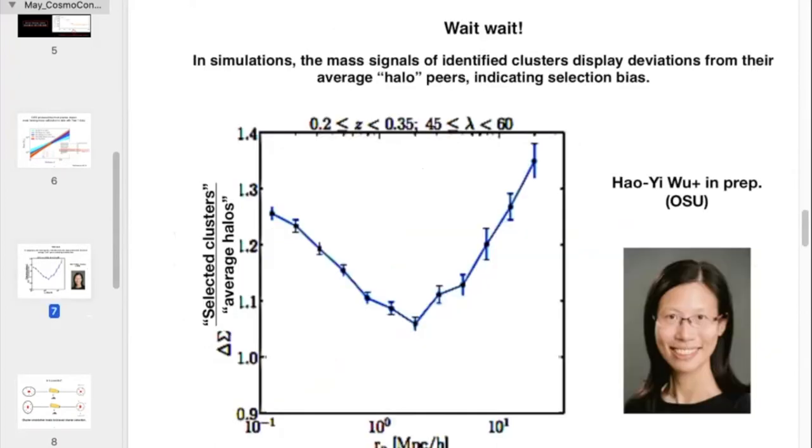So we have the cluster abundance measurements in terms of richnesses and also a weak lensing mass calibration that connects the richnesses to cluster total masses. But before we derive the abundance data of clusters in terms of masses and compare that to theories, we discovered something that we didn't quite expect. A postdoc at Ohio State that worked at DES, Heidi Wu, she found that when she looked at the simulation cluster properties that were selected according to observational criteria, there was a bias in their weak lensing signals.